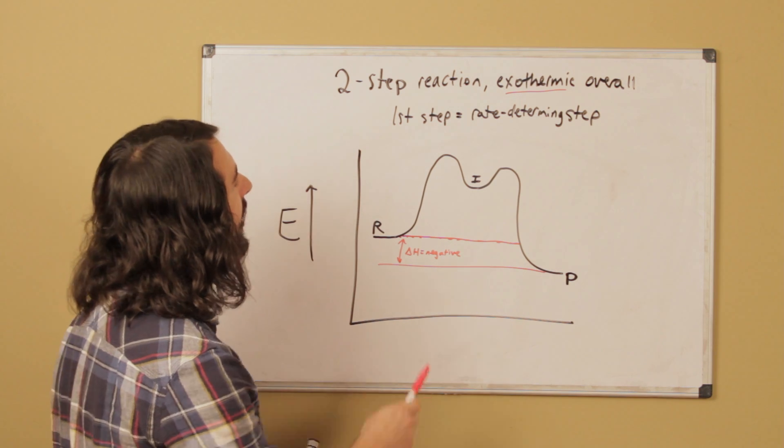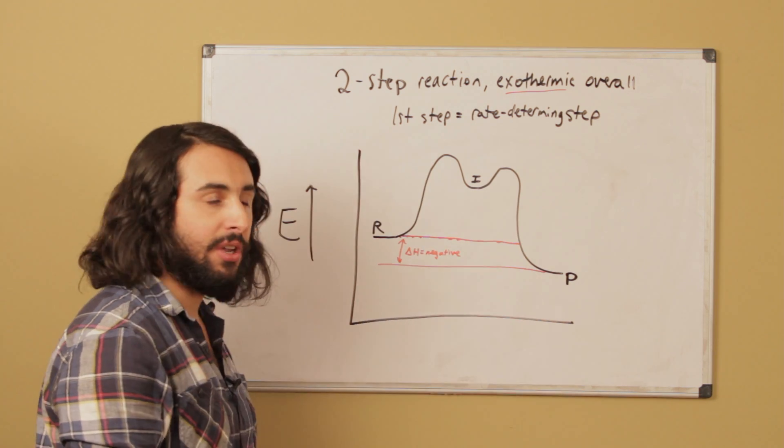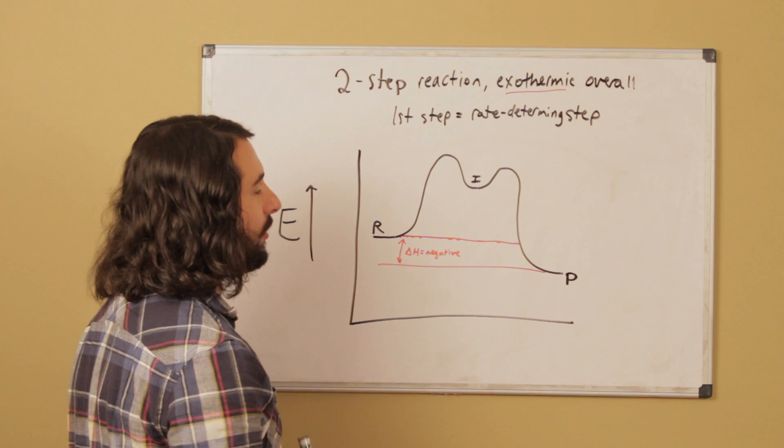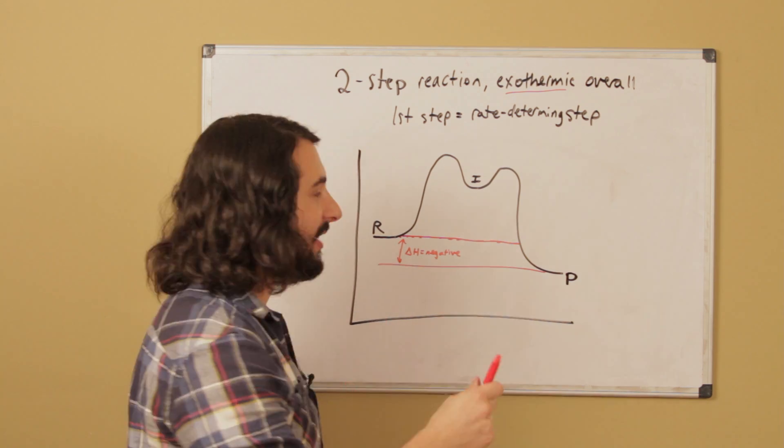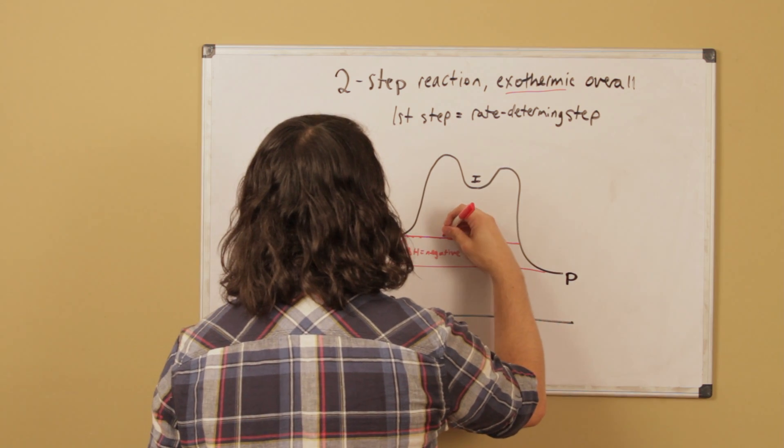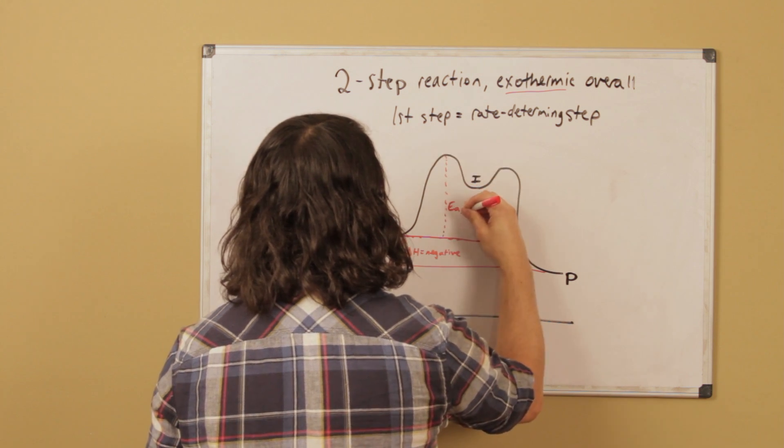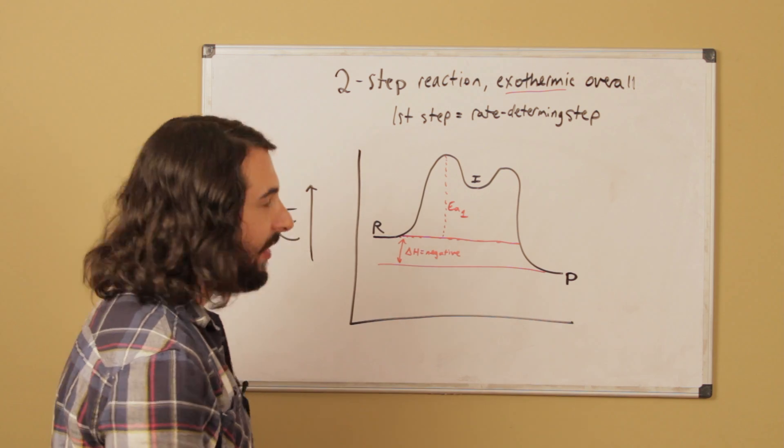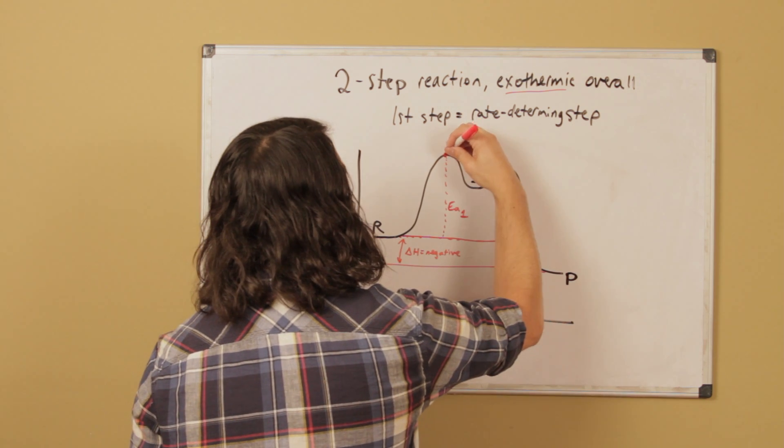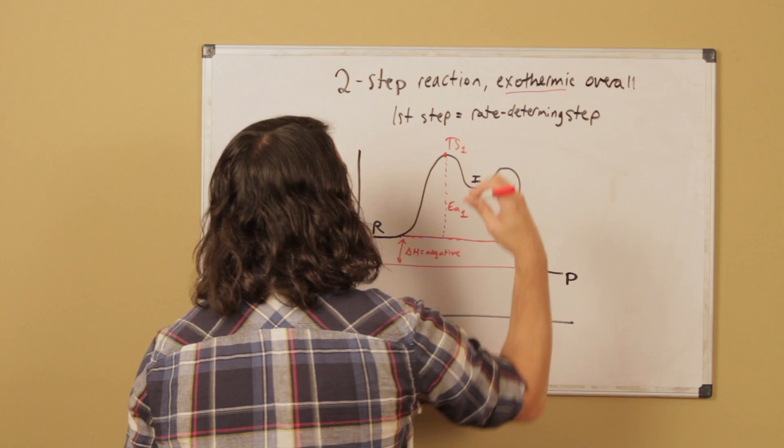The second thing we have to understand is that this is a two-step reaction, so there has to be two discrete steps, and each step has its own activation energy. Right here we have the activation energy EA1, and that is the activation energy required to get to transition state 1.